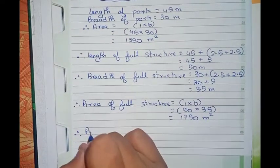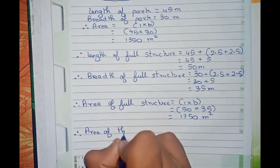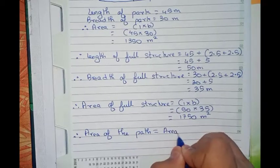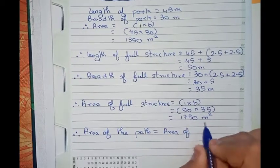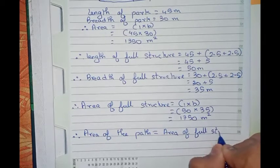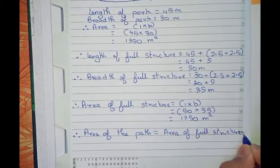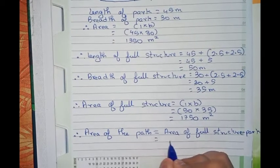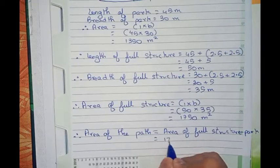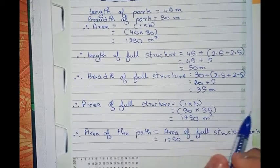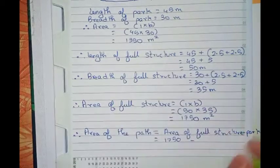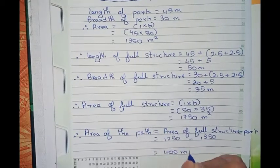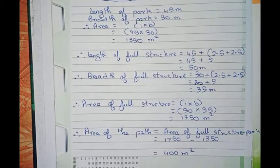Therefore, the area of the path that we have to find out equals the area of the full structure minus the area of the park. So that equals 1750 minus 1350, which equals 400 meter square. So 400 meter square is the final answer for this question.